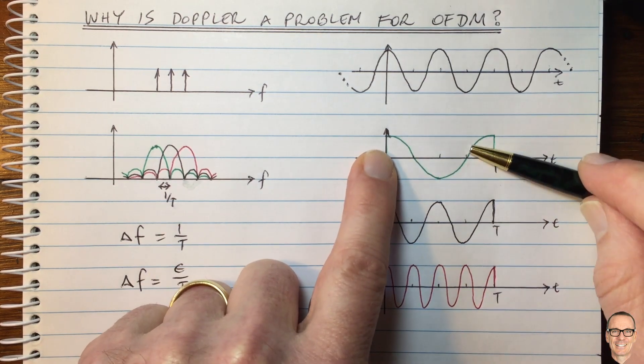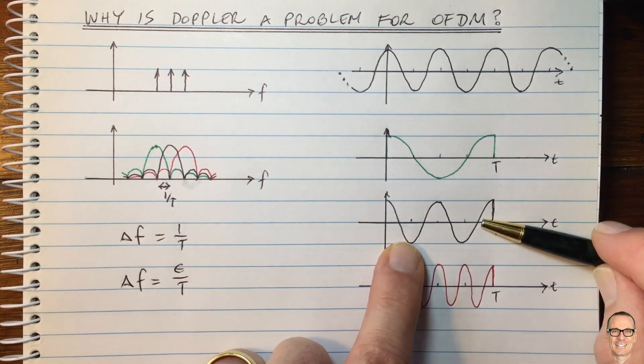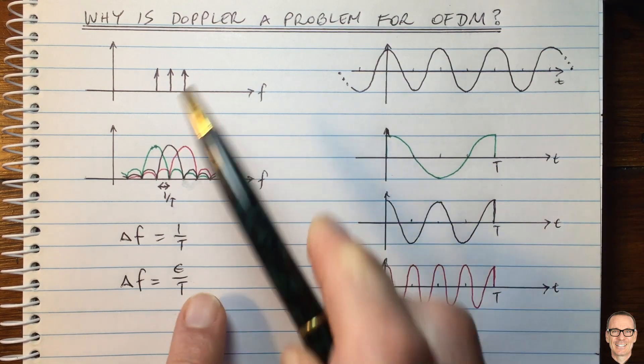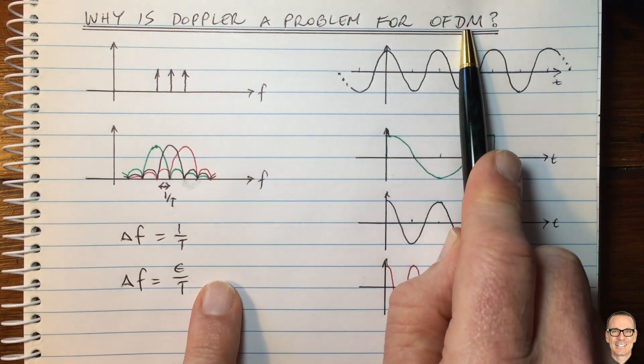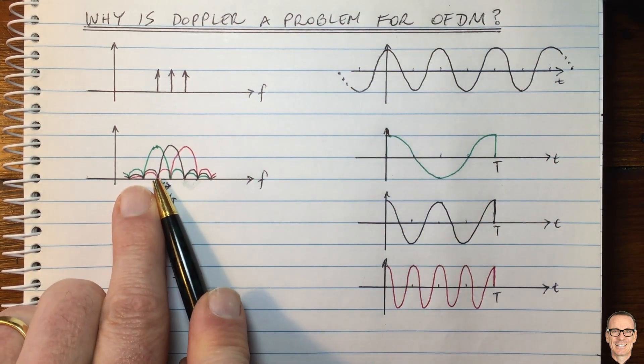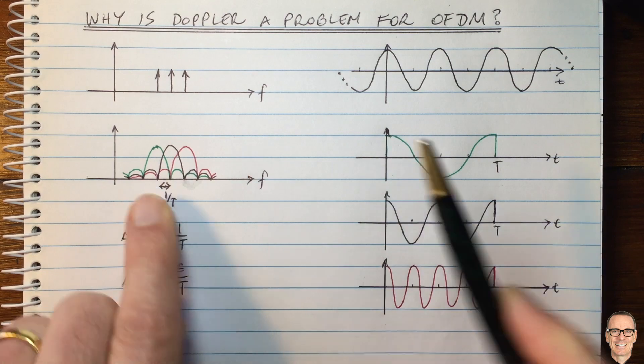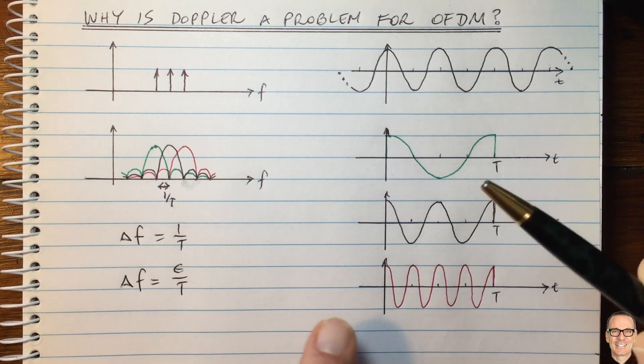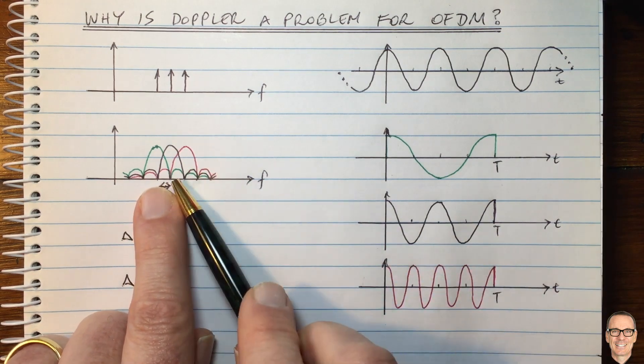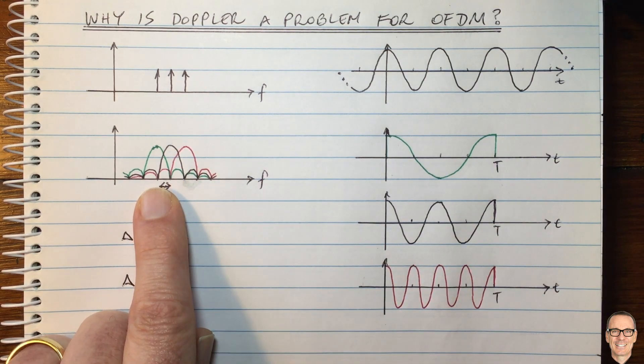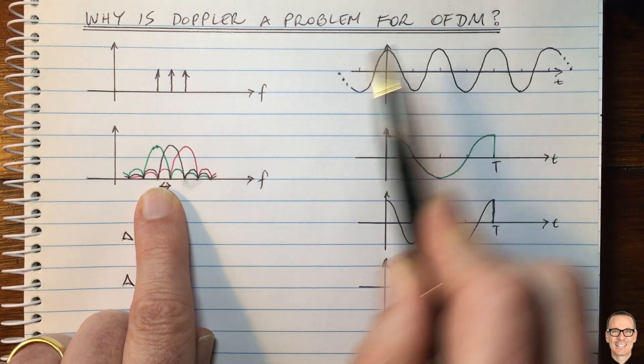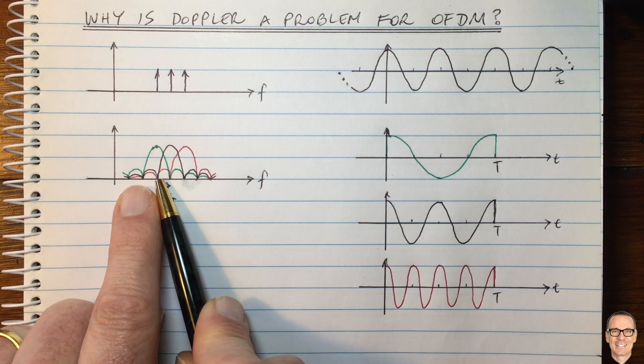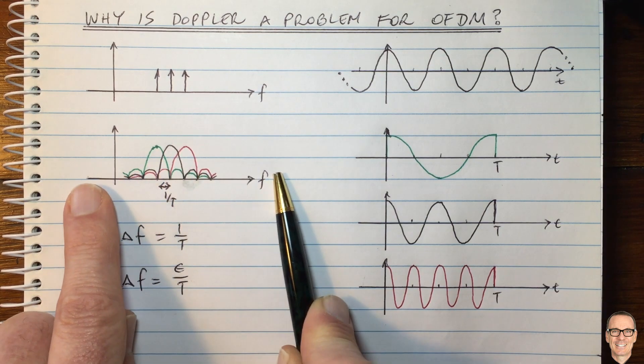So what happens now if we think about it being a fraction of one on T? Now we're going to see that we're actually going to be getting outputs from all of the subcarriers because it's not just that the waveform won't be orthogonal to the subcarrier next to it, it won't be orthogonal anymore to all of the subcarriers. So the important thing about Doppler for OFDM is that even a slight shift of Doppler will mean that none of the subcarriers are orthogonal anymore. And then in each subcarrier, there will be interference from all the other subcarriers.